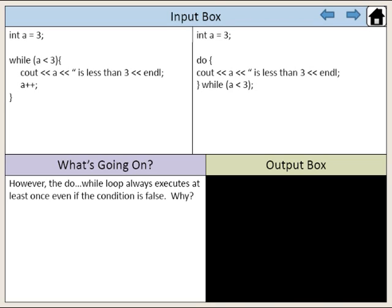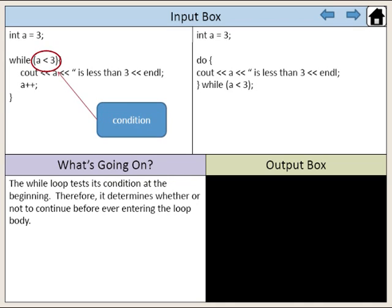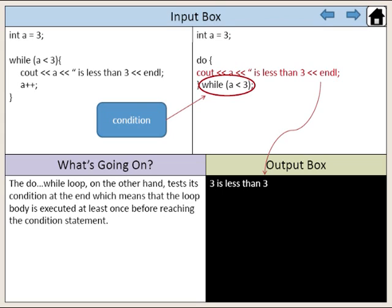But why? The while loop tests its condition at the beginning. Therefore, it determines whether or not to continue before ever entering the loop body. The do-while loop, on the other hand, tests its condition at the end, which means that the loop body is executed at least once before reaching the condition statement.